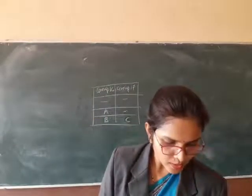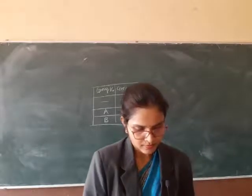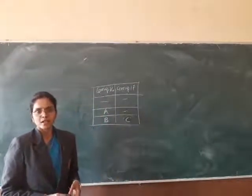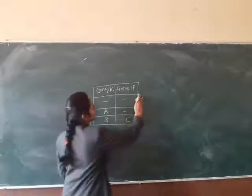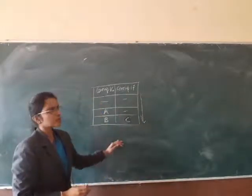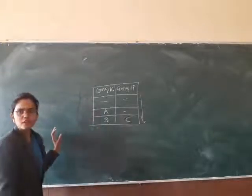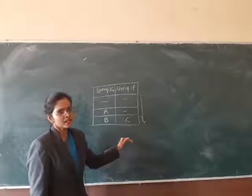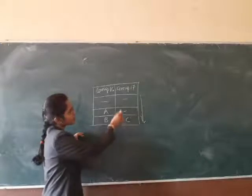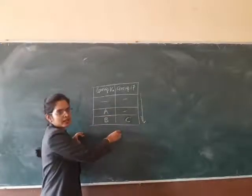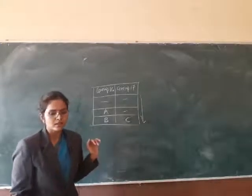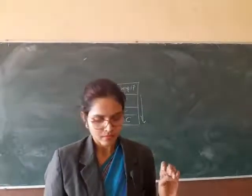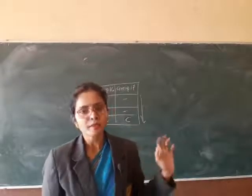Next — state whether C is more reactive or less reactive than A. जब हम down the group जाते हैं किसी non-metals की group में, तो reactivity decrease होती है। Metals की case में down the group जाएंगे तो reactivity increase होती है। A second period में है और C third period में नीचे है, so C will be less reactive than A. Answer: C is less reactive than A, because reactivity decreases down the group in halogens — group 17।